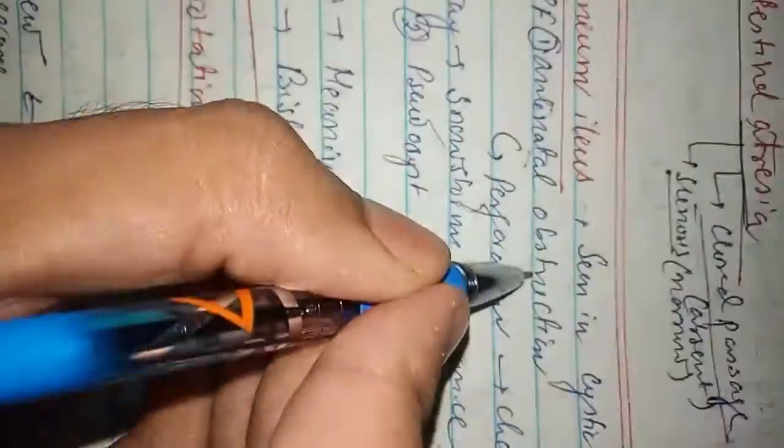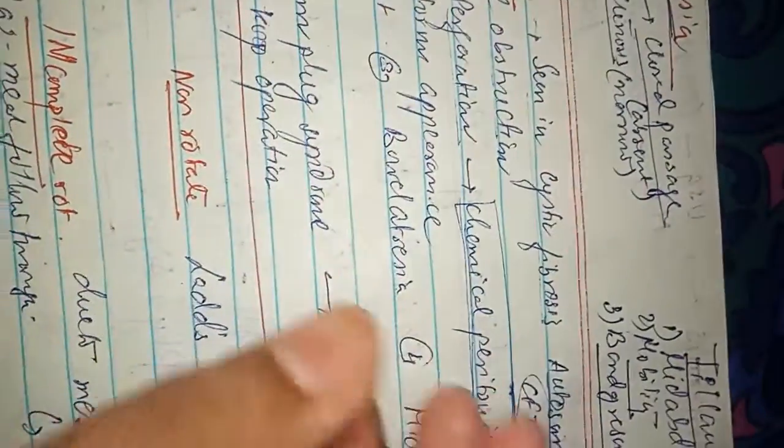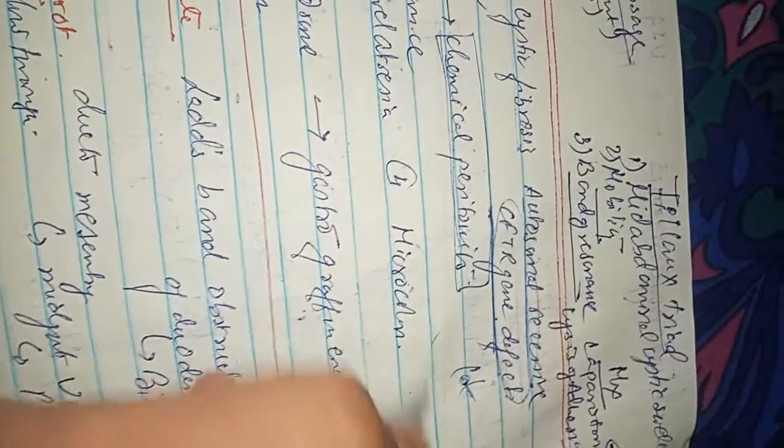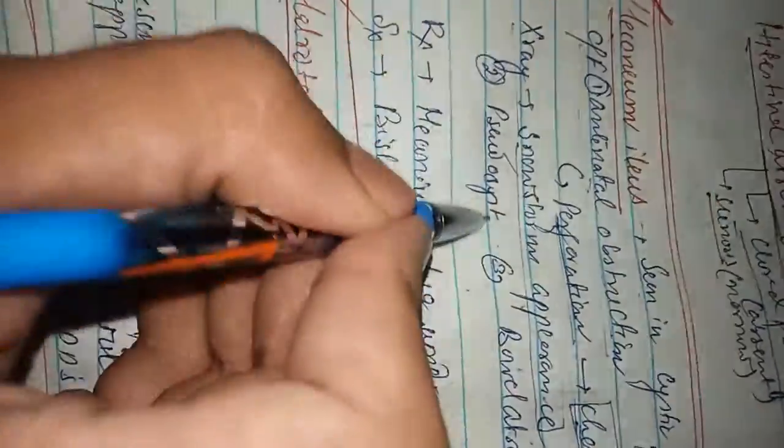Now coming to meconium ileus. Meconium ileus is basically seen in cystic fibrosis patients, having an autosomal recessive disorder with mutation of the CFTR gene. The main clinical feature is antenatal obstruction. There is antenatal obstruction with perforation leading to chemical peritonitis if the meconium in the baby ruptures. Prolonged obstruction leads to perforation and spread along the peritoneal cavity causing chemical peritonitis. The X-ray appearance is a snowstorm appearance. Along with antenatal obstruction, there can be pseudocyst.